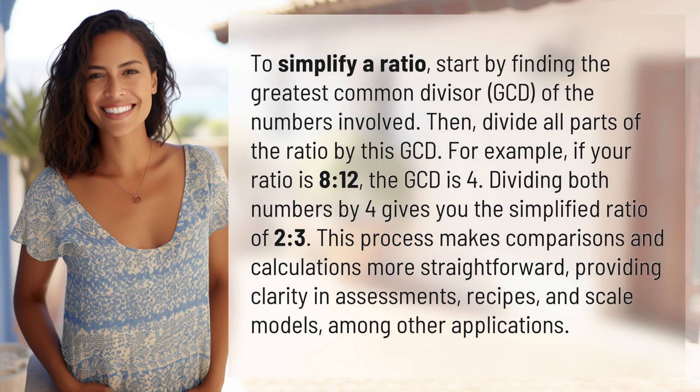To simplify a ratio, start by finding the greatest common divisor, GCD, of the numbers involved. Then divide all parts of the ratio by this GCD. For example, if your ratio is 8 to 12, the GCD is 4. Dividing both numbers by 4 gives you the simplified ratio of 2 to 3.